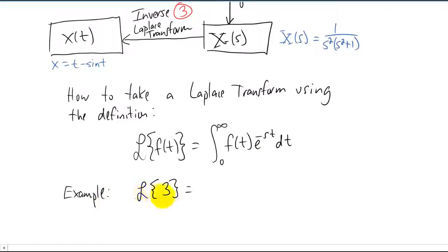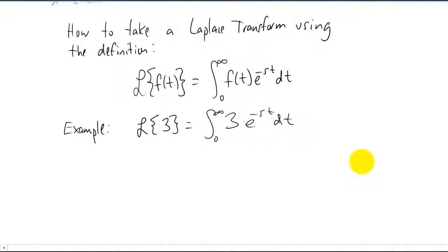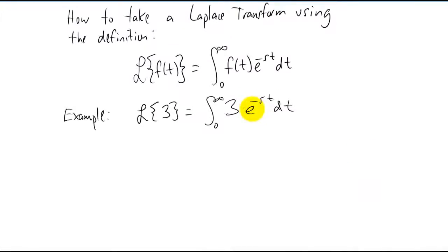So as an example, if you want to find the Laplace transform of the function three, you put three into this integral and you integrate. Now this s here is just a parameter, it's not a function of t or anything like that, so we can treat it as if it's a constant in this integral with respect to t. When you integrate an exponential that has a constant times the variable up in your argument, you just divide by that constant. So you're going to get negative three over s times e to the negative s t evaluated from zero to infinity.